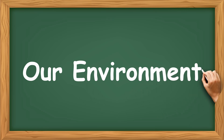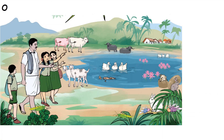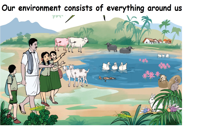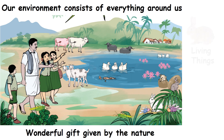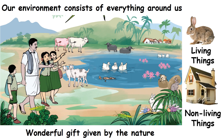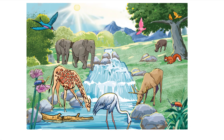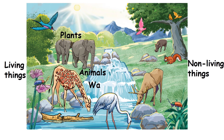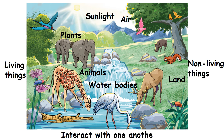Our environment consists of everything around us. Our environment is a wonderful gift given by nature. It has living and non-living things. We are surrounded by living things such as plants and animals, and non-living things such as water bodies, sunlight, air, and land. The living and non-living things in our environment interact with one another.